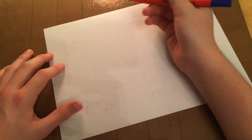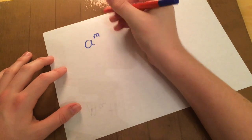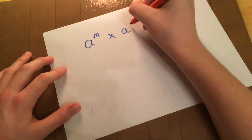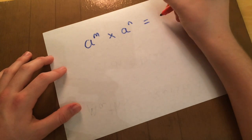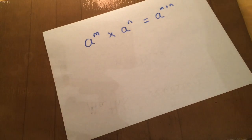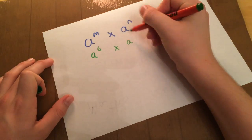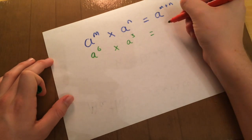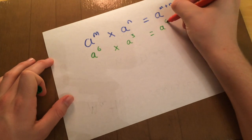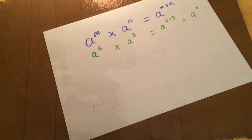Alright, the first rule we're going to look at is the power rule. And it's simply written as A to the M times A to the N equals A to the M plus N. So if we go A to the 6 times A to the 3, that would equal A to the 6 plus 3, which is equal to A to the 9. Easy as pi.